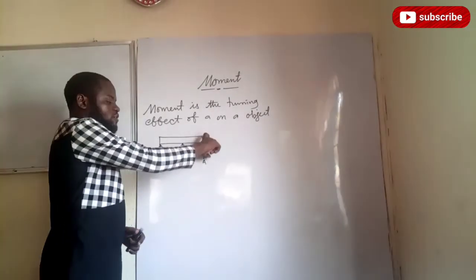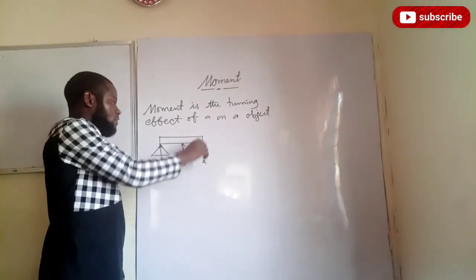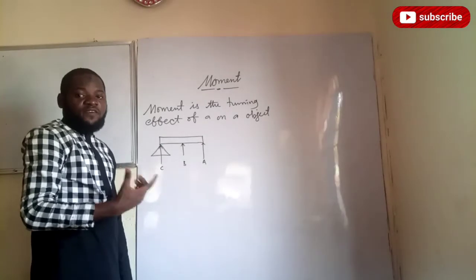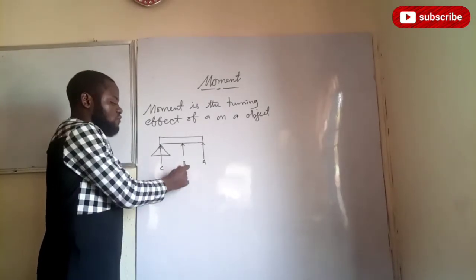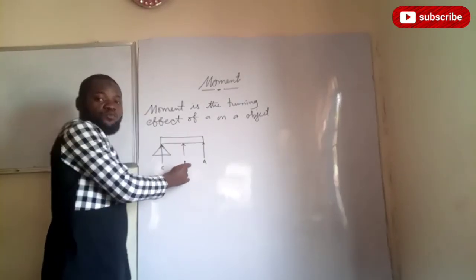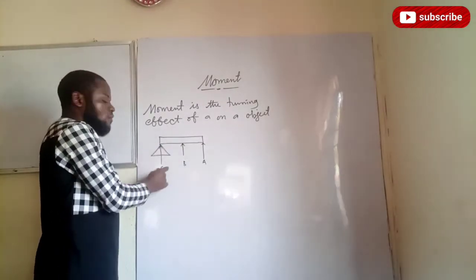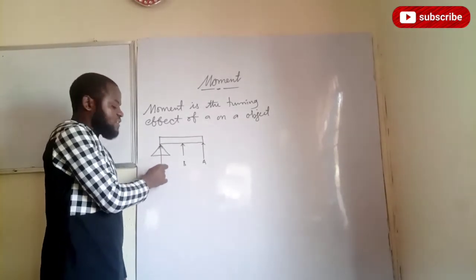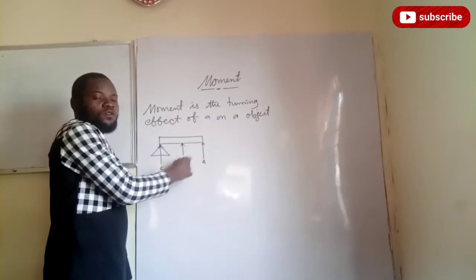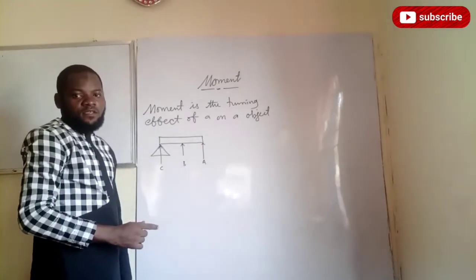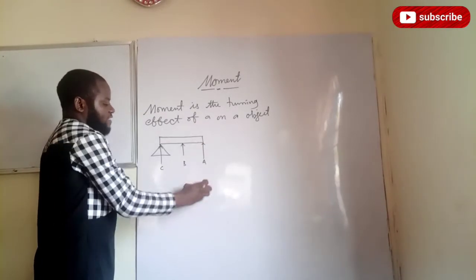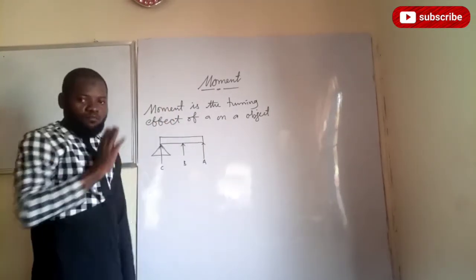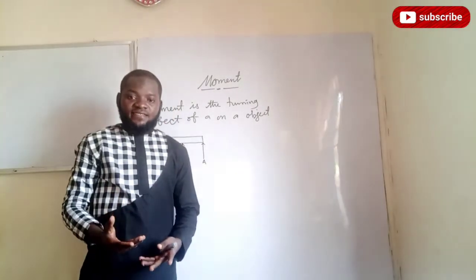Absolutely, it's going to be force A. When I pull force A down, the body tends to rotate fast, compared to when I pull force B or force C. Force C will be very, very difficult compared to B or A. So the turning effect of A about this axis is what we call moment.